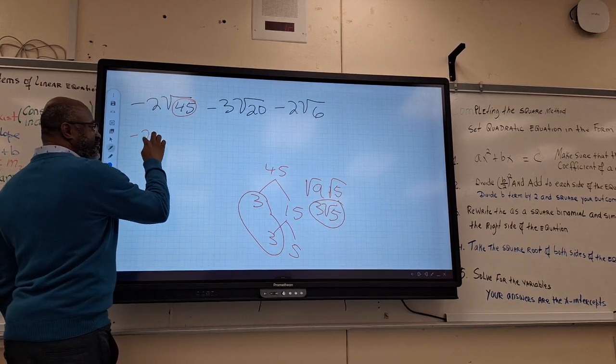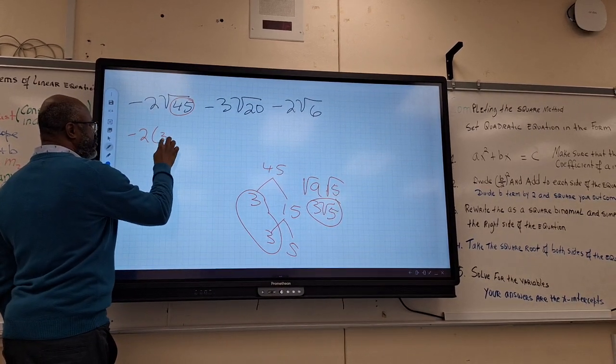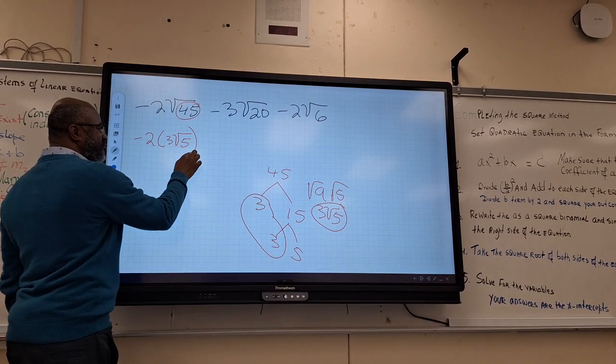So I will have minus 2 times 3 root 5. That's for that one.